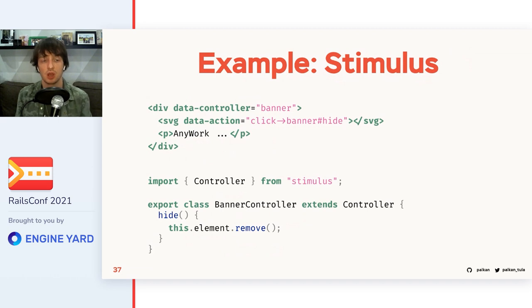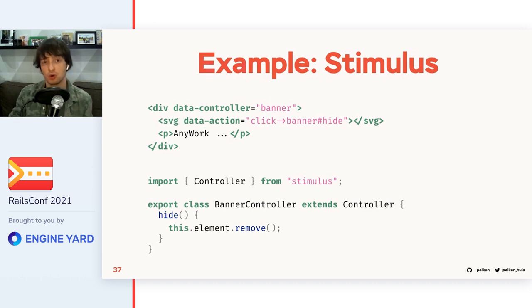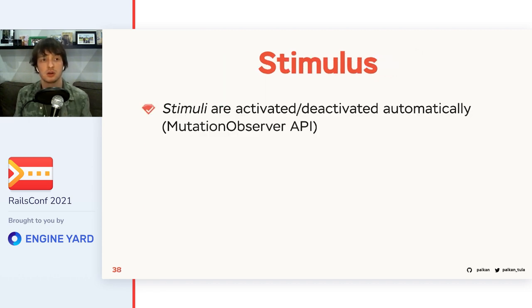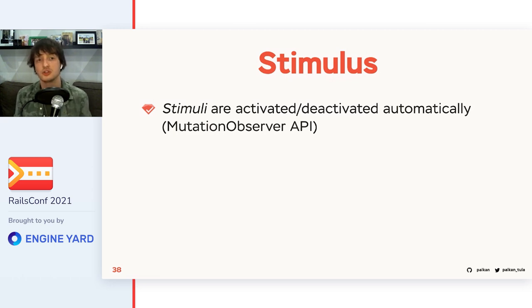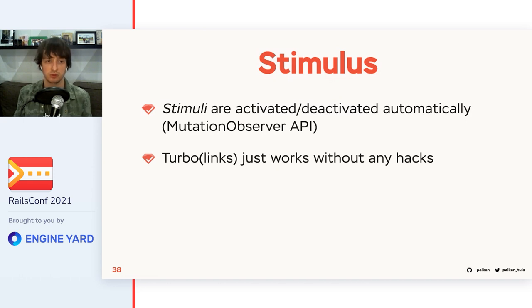With Stimulus, we only care about what matters. Our JS code is very concise — we just need one function which implements the removal of the element, and everything else is controlled by the HTML. We use data attributes to activate these actions. The main benefit of Stimulus is its use of the modern browser Mutation Observer API, which eliminates the need to track page changes the way we did with jQuery and Turbolinks. So one key benefit is that Stimulus plays well with Turbo, because you don't need any hacks to track loading or reloading.